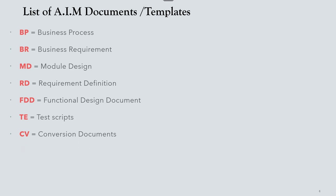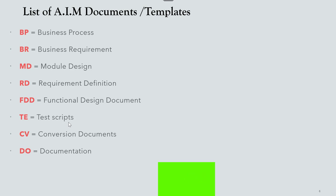CV is the Conversion Document — data conversion is the process of converting or transferring data from a legacy system to Oracle Applications. For example, transferring customer records and supplier records from legacy to the customer master or supplier master. DO is Documentation — prepared per module and includes user guides and implementation manuals. The key difference between DO and TE is that DO as a user guide must include screenshots, while test scripts sometimes do not include screenshots. This is also a common interview question.